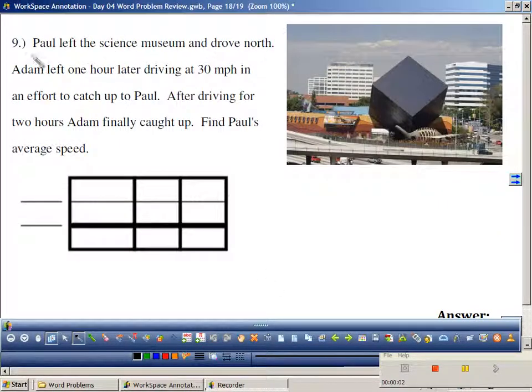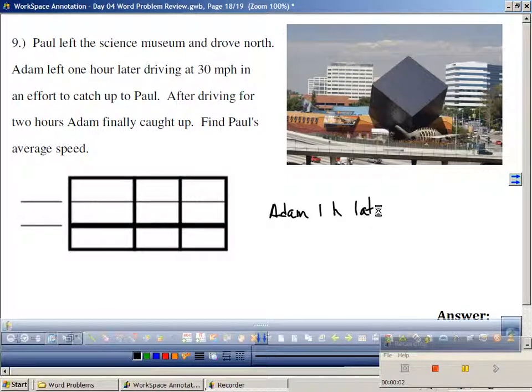Paul left the science museum and drove north. Adam left one hour later. If you leave later, then you are driving less time. So if this is Paul and this is Adam, Adam left driving 30 miles an hour in effort to catch up. After driving, he drove for 2 hours. He finally caught up. If he drove 2 hours, how long did he drive? 3. Find Paul's average speed. Distance equals rate times time. They went in the same direction, so it's a DD problem.